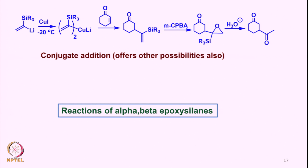We can add vinylsilanes to various kinds of alpha-beta unsaturated systems through cuprate-based chemistry. A conjugate addition using copper-based reagents allows formation of the vinylsilane via 1,4-addition to the enone. The utility of this is that if you epoxidize the resulting vinylsilane, you can get the corresponding epoxysilane. We discussed epoxidation earlier in the context of allylsilanes as well.